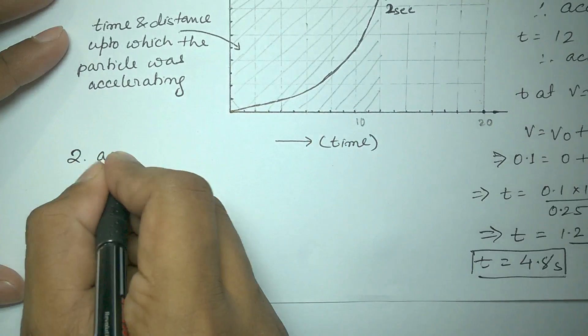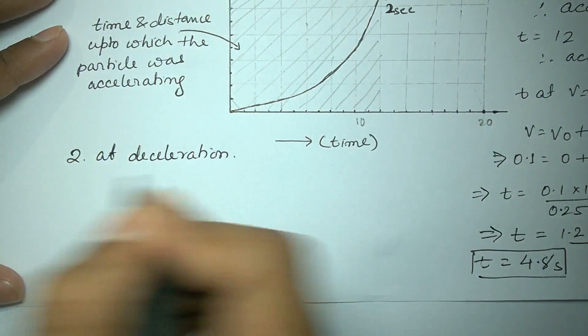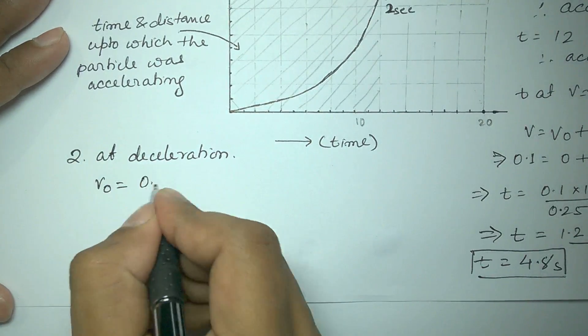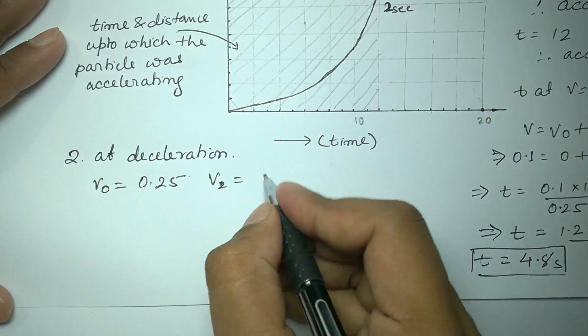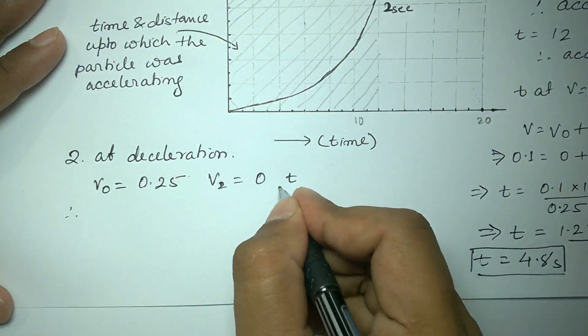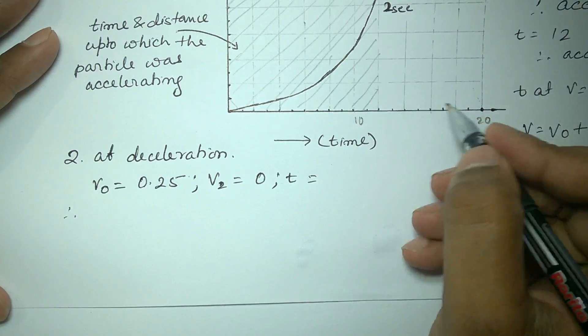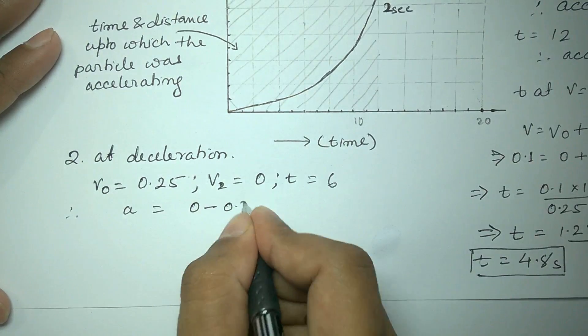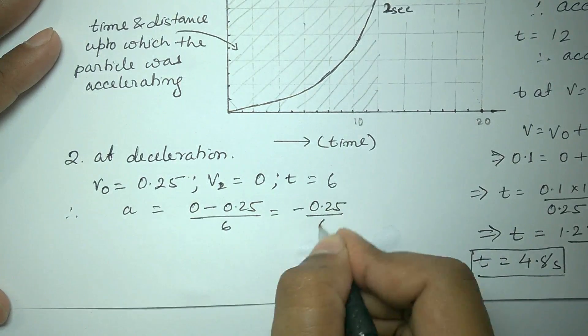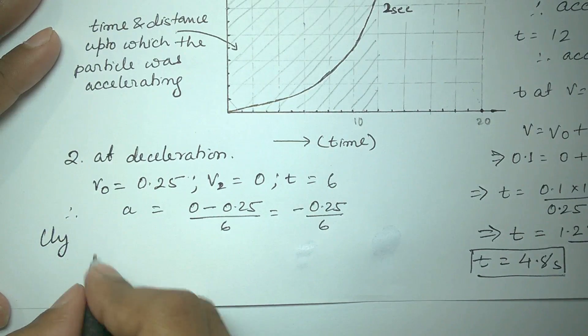Now during deceleration we can look into the third part of the graph where we have initial velocity of 0.25 meters per second and final velocity of 0 meters per second, and the time taken to do this is 6 seconds. Here the acceleration can simply be calculated as was done previously but this time its value will be negative since the particle is decelerating.